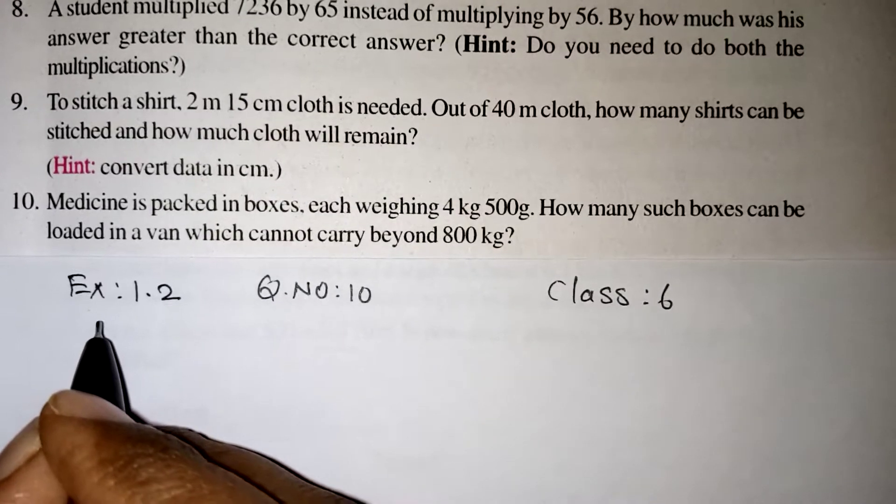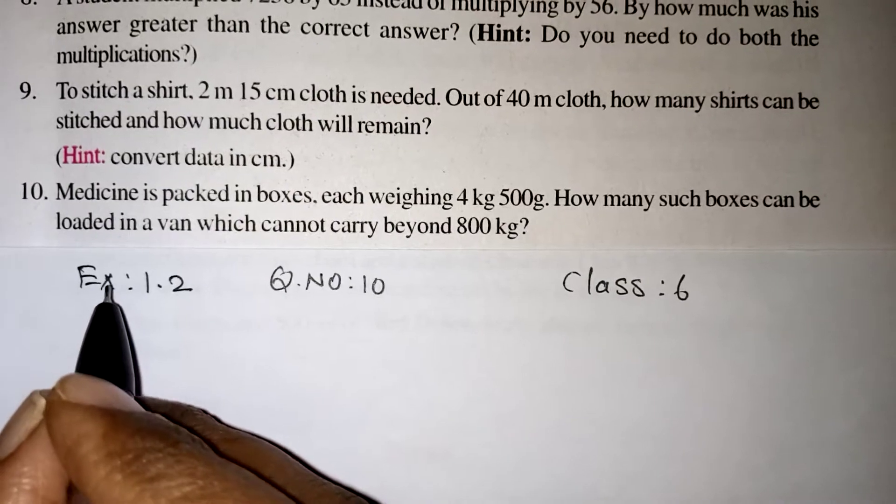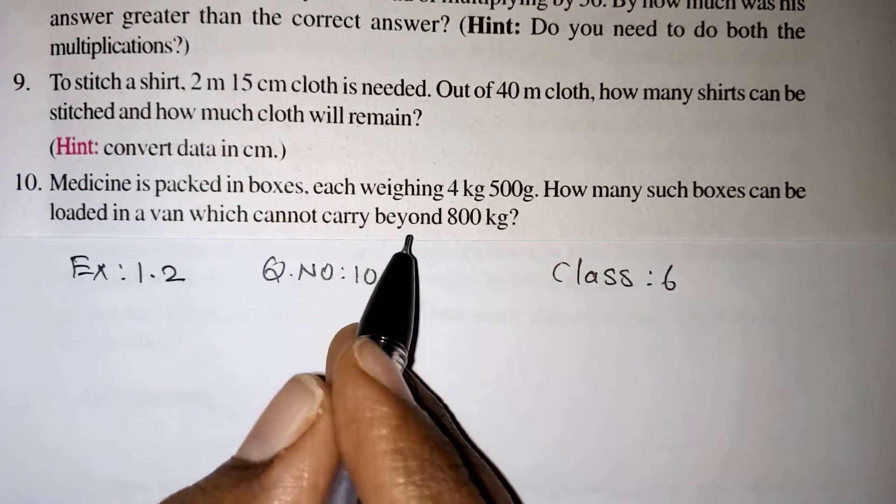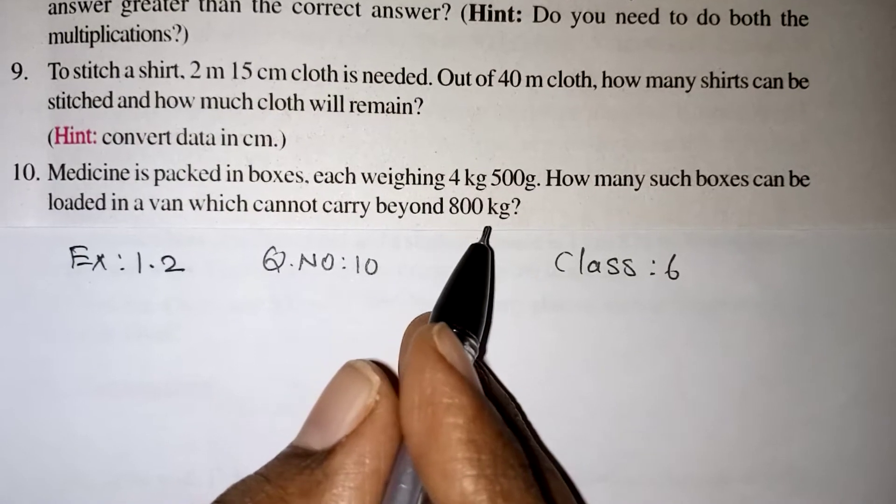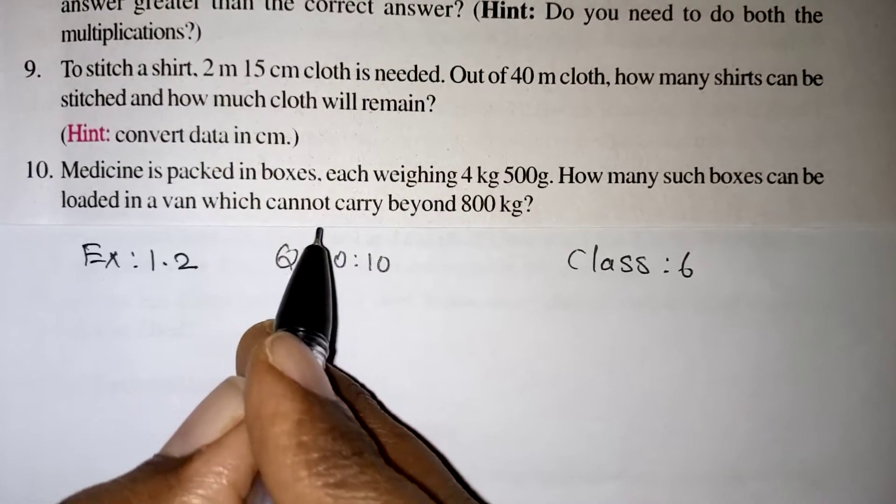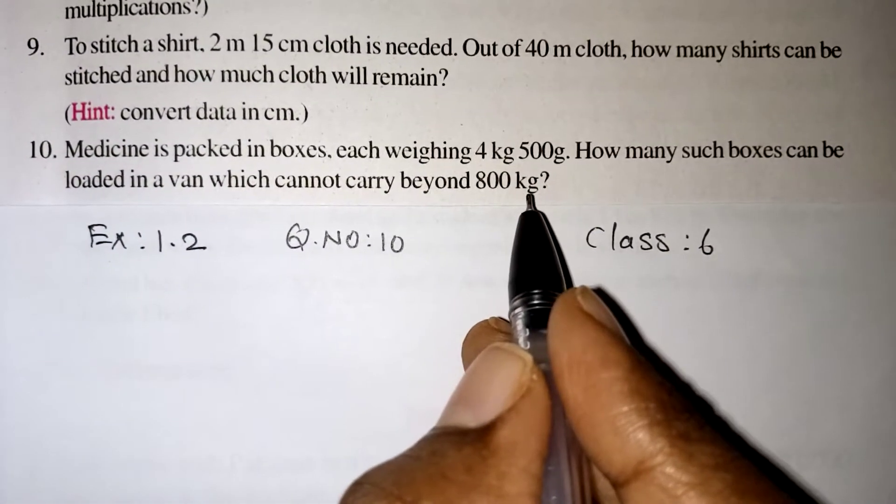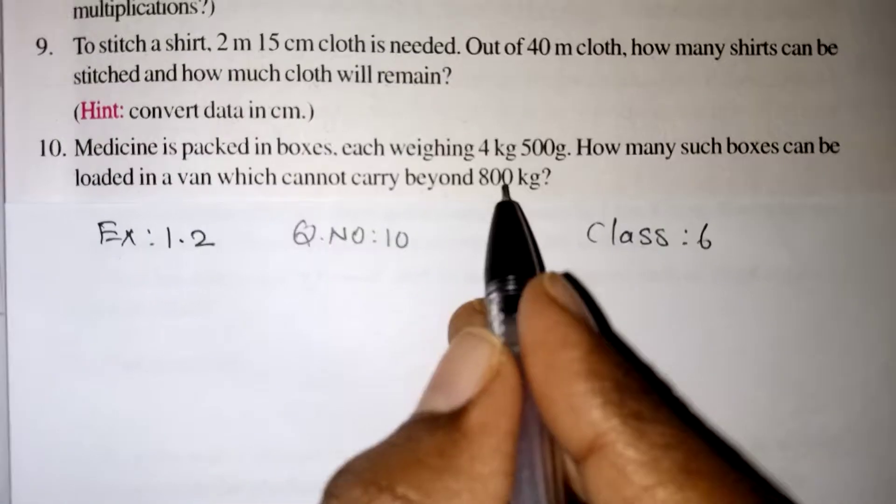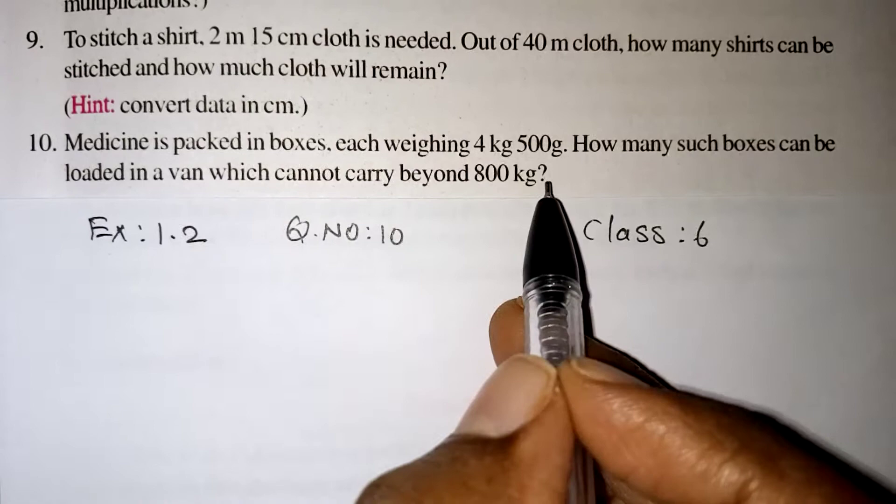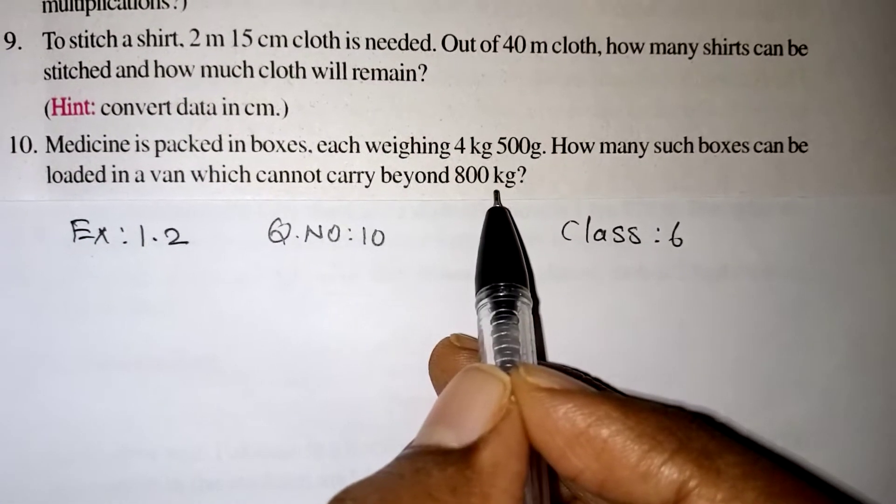Students, in this video we are going to learn question number 10 from exercise 1.2. The question is: medicine is packed in boxes, each weighing 4 kg 500 grams. How many such boxes can be loaded in a van which cannot carry beyond 800 kg? So there is a van, it holds only 800 kg, each box has the weight of 4 kg and 500 grams. How many boxes can be loaded in that van?